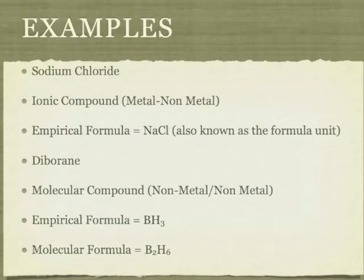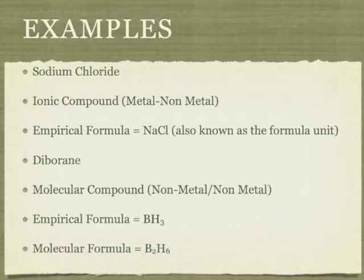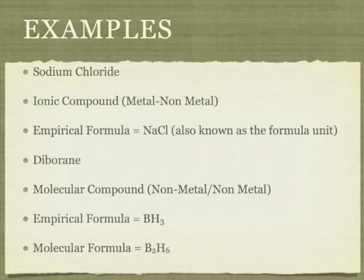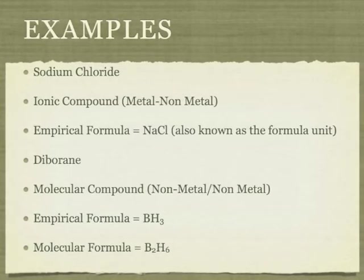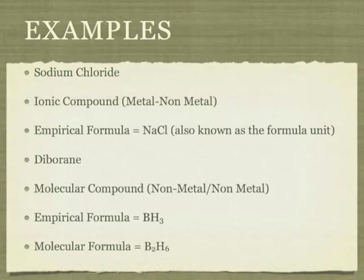Sodium chloride, an ionic compound made up of a metal and a nonmetal, has an empirical formula NaCl. It's also known as a formula unit. Diborane, on the other hand, is a molecular compound made up of a nonmetal and a nonmetal, boron and hydrogen. Its empirical formula is BH3. However, its molecular formula is B2H6, which makes it different than its empirical formula.